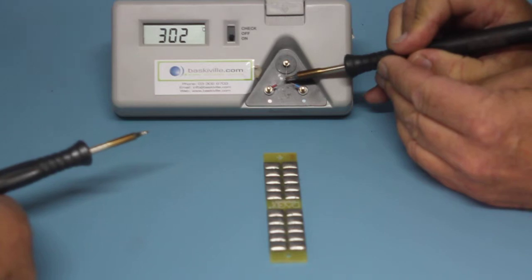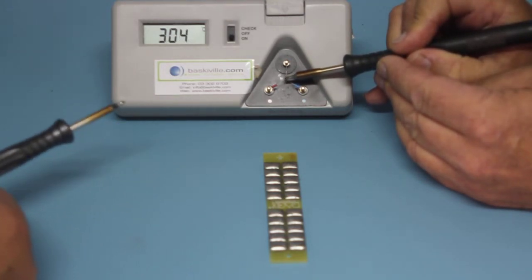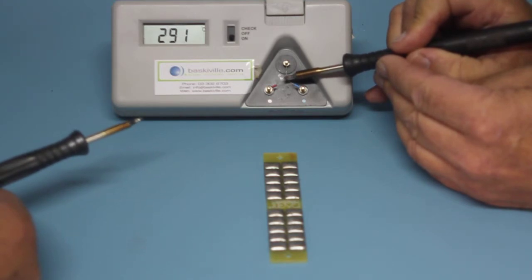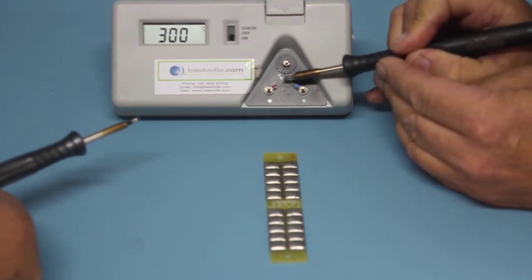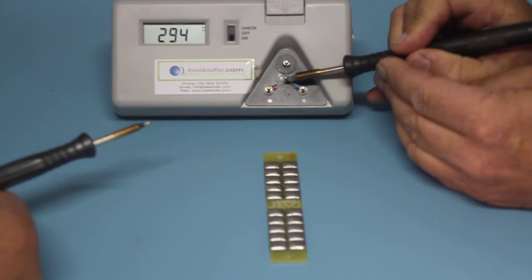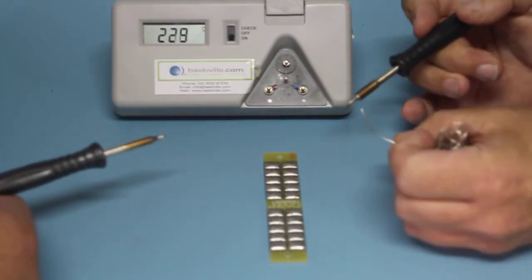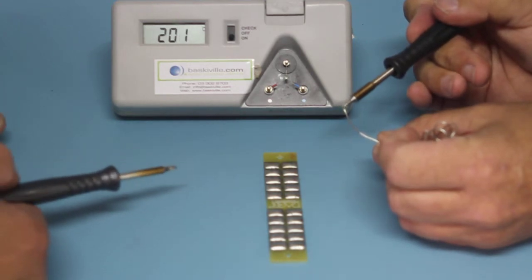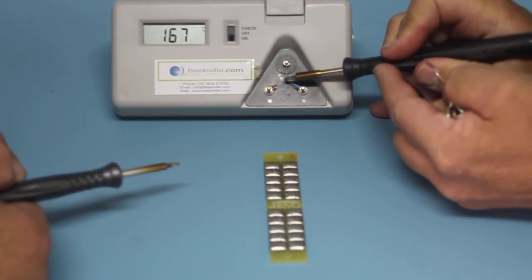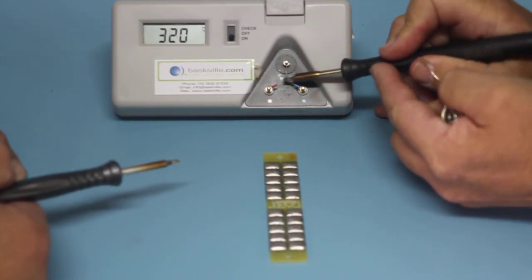We've set both units to 340 degrees. We'll show you what you need to do to use one of these Pace machines - you need to have solder on the tip. We've checked that and it should be spot-on. There you go, it shows 340 degrees.